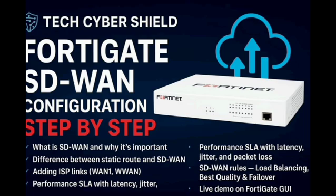SD-WAN automatically decides which internet link should be used for best performance, and can load balance or failover between ISPs — all through a single virtual SD-WAN interface. In this video I'll show you how to create SD-WAN members for both ISP links, remove interface references, configure performance SLAs using Google DNS probes, set thresholds for latency, jitter, and packet loss, create SD-WAN rules for route balancing and manual failover, and finally verify everything live on your FortiGate GUI.